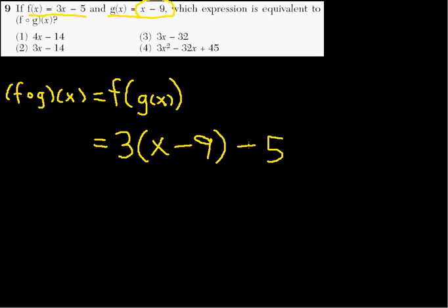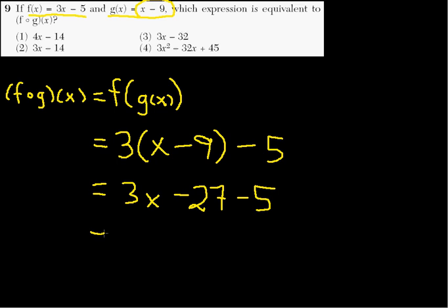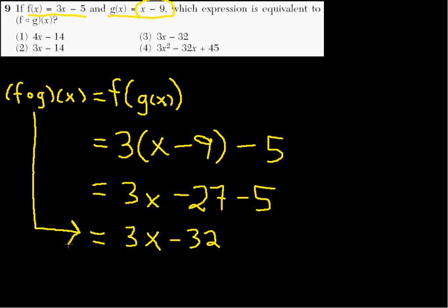Then I just distribute the 3. So I get 3x minus 27, and then that minus 5 just hangs there. Now we just combine to get 3x minus 32. And that is the answer: 3x minus 32.